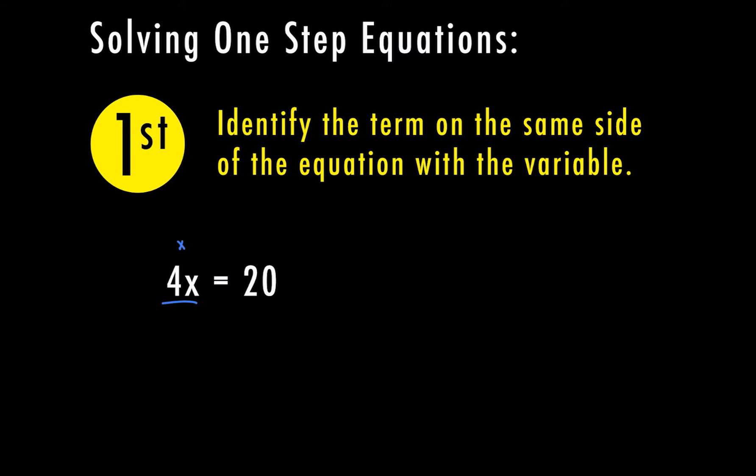So we have 4 times x equals 20. We want to first identify what's going on on the same side as the variable — in this case I'm multiplying times 4. For the second example, I have x still as my variable, and x over 7 like a fraction. So on this side, x is dividing by 7, and that's going to equal 3.